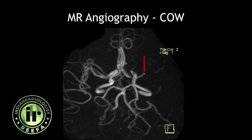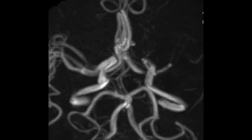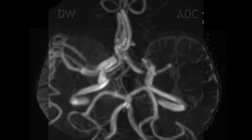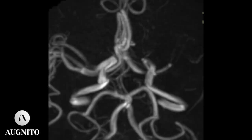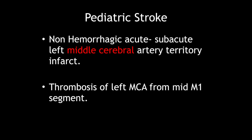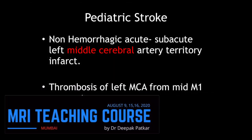MR angiography of the brain showed an abrupt cut-off within the left middle cerebral artery at its mid-M1 segment, with the rest of the left MCA not visualized at all. The visualized portion of the left M1 segment was small in caliber compared to the right side. This was a non-hemorrhagic acute-subacute left middle cerebral artery territory infarct due to thrombosis of the left MCA from its mid-M1 segment — a very common finding in adults due to atherosclerosis, but rare in the pediatric age group. This is a case of pediatric stroke due to left MCA infarct.